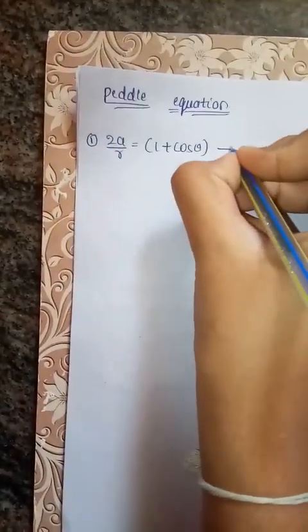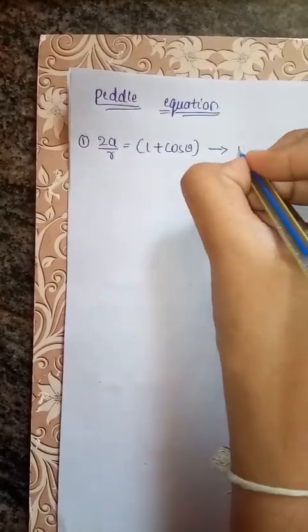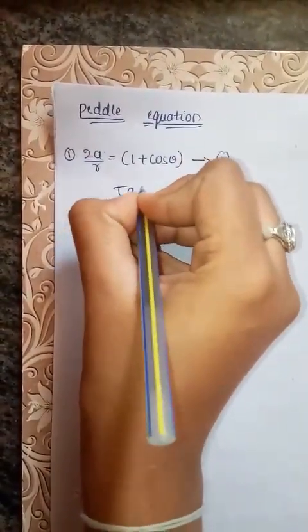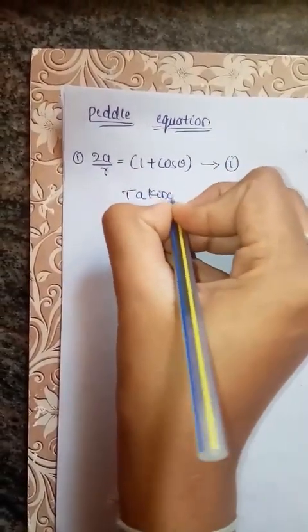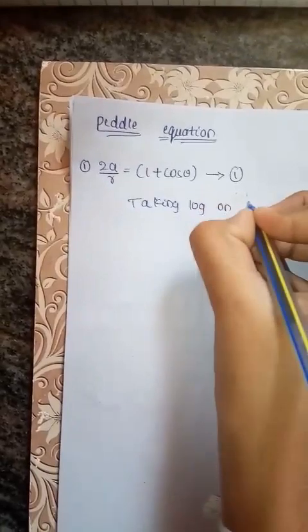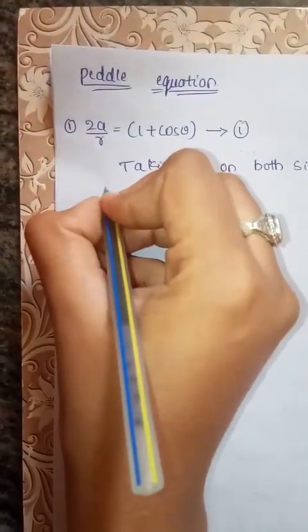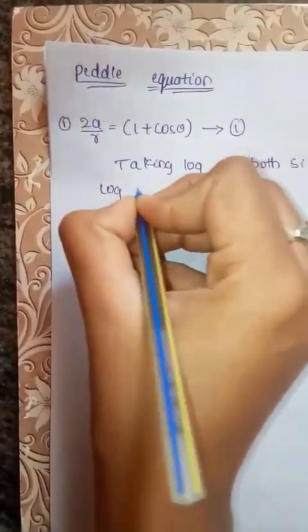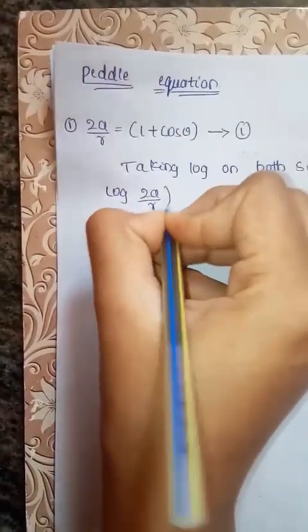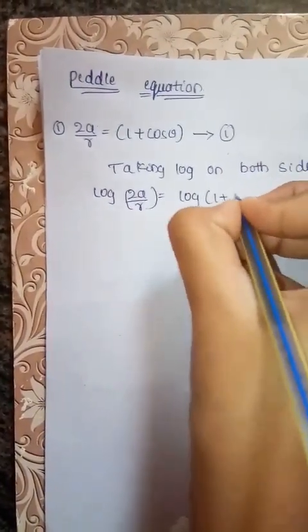We will take this equation 1: 2A by R is equals to 1 plus cos theta as the first equation. Taking log on both sides, we get log(2A/R) is equals to log(1 plus cos theta).